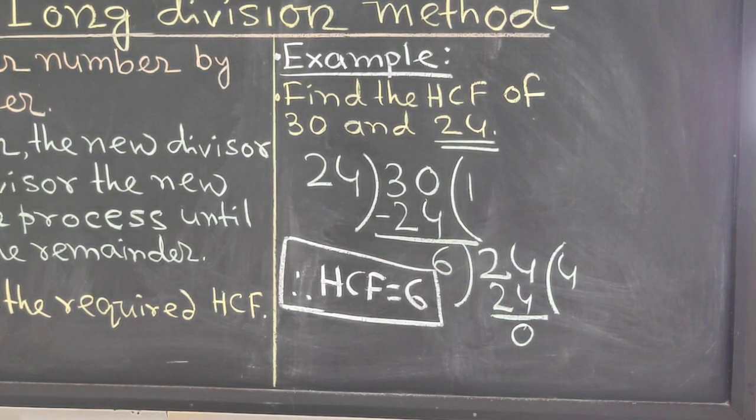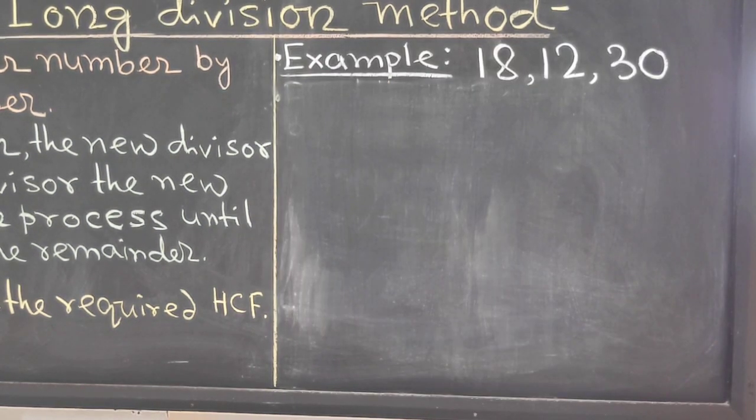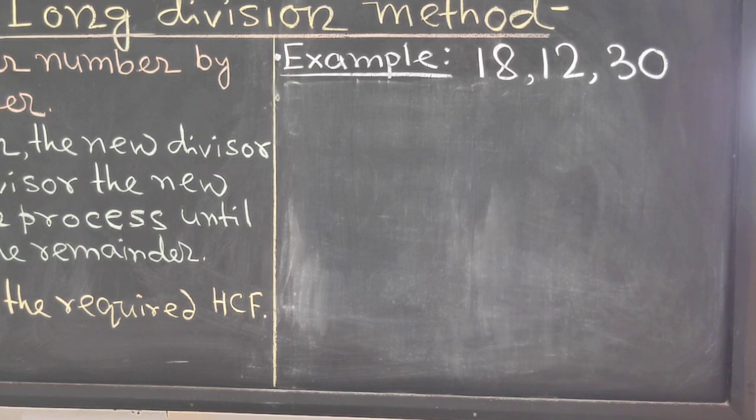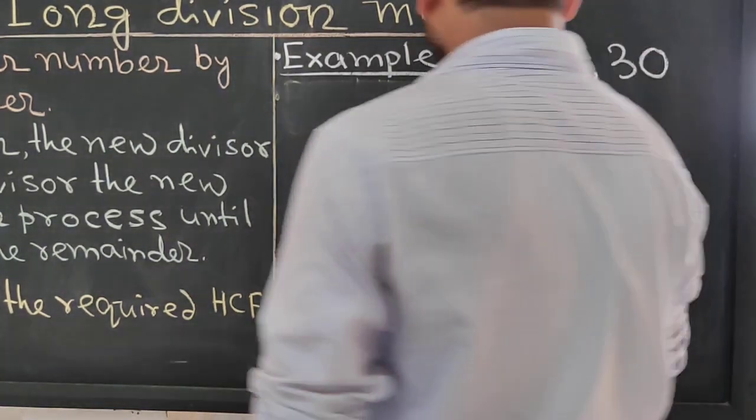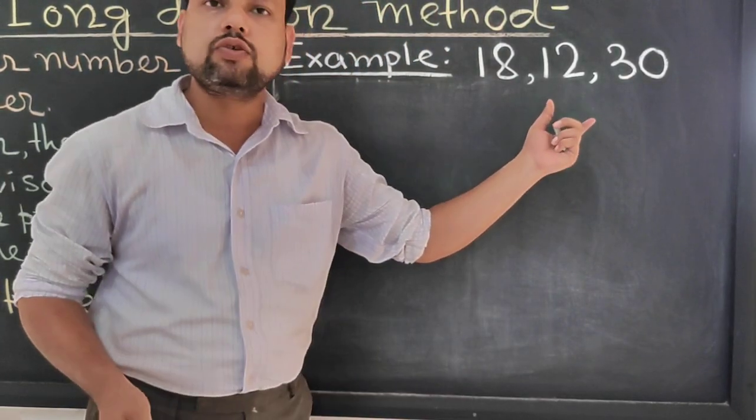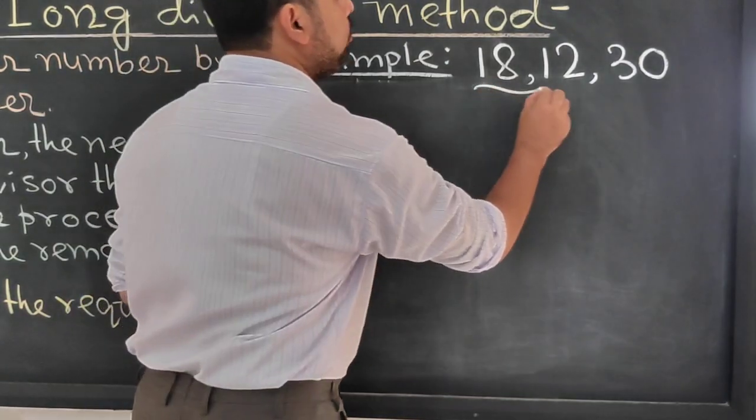Now I will explain 3 numbers. Next example, we have to find the HCF of 18, 12, and 30. Now check once. We have smaller one, 12. So easily we can find from this two.